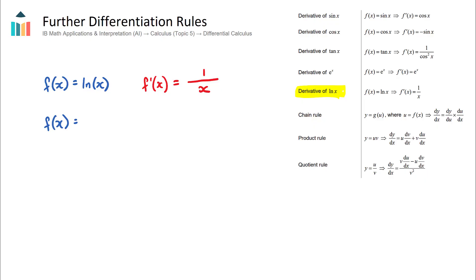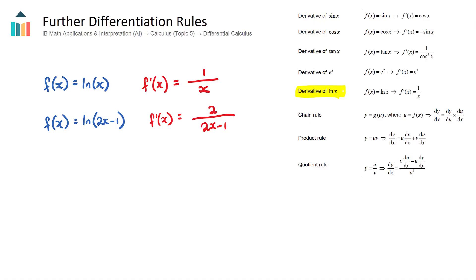For another example, if f(x) = ln(2x − 1), the derivative equals 2 over (2x − 1). Whatever is in the bracket goes on the denominator, and the derivative of what's inside — which is 2 — goes on the numerator.